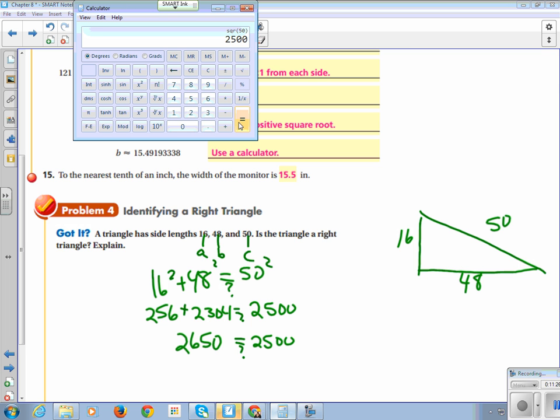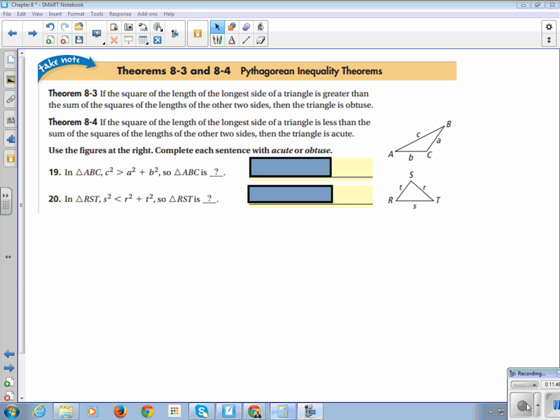Then we do the analysis. Is 2560 equal to 2500? No. So, we can say this is not a perfect square.